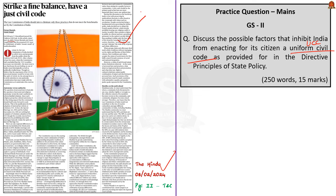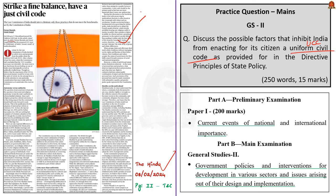Let me read out the question: 'Discuss the possible factors that inhibit India from enacting for its citizens a Uniform Civil Code as provided for in the Directive Principles of State Policy.' This question can be asked in GS Paper 2 under the syllabus of government policies and interventions. The only keyword in the question is 'discuss.'